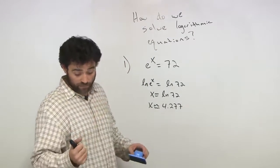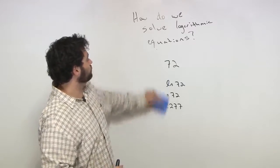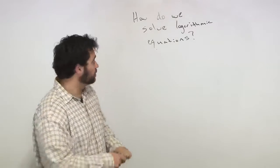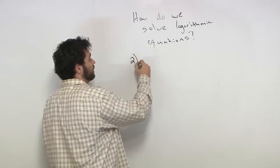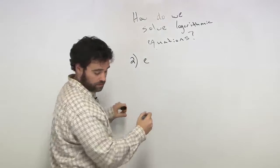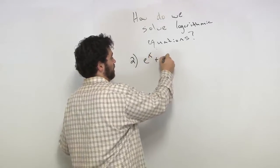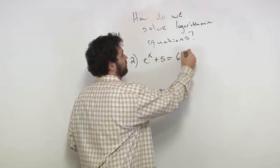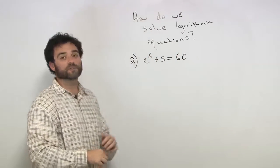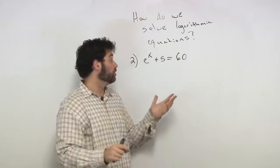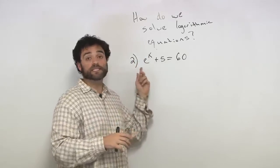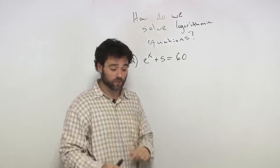Okay, number two. We get e to the x plus 5 equals 60. What are we going to do? Well, if this was just x plus 5 equals 60, you know what to do. We want to get this e to the x by itself first before we do anything else.